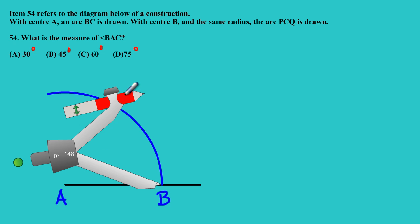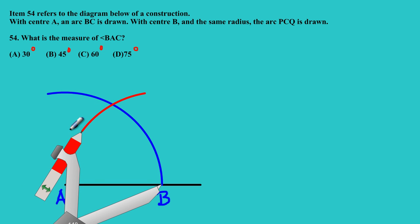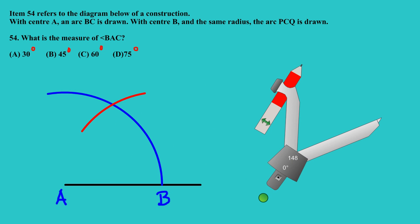Now what they're saying basically is: with the center B, so B now is my center, so I'm going to place my point of my compass on B and the same radius.